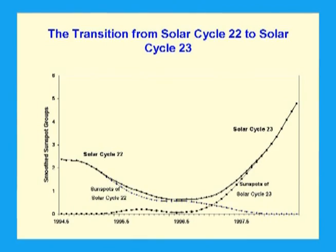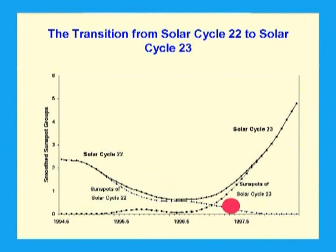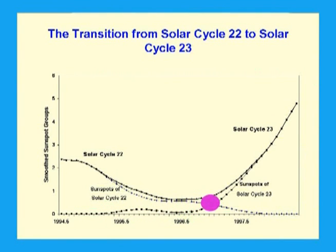This graph demonstrates the transition of one sunspot cycle to the next, using the example of the solar cycle 22 to solar cycle 23 transition. Sunspots at lower latitudes in the previous cycle continue to die off, and at higher latitudes — above 20 degrees — you start getting the first sunspots of the next cycle 20 months or more before the minimum, and then they overlap. That overlap minimum is considered to be solar cycle minimum.